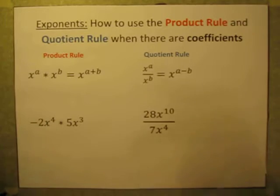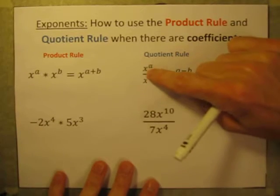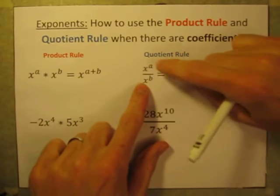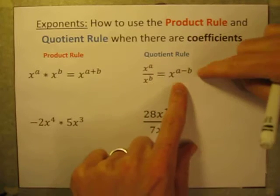With the quotient rule, it's the opposite. If you're dividing two numbers and the bases are the same, both x, you can just take those two exponents and subtract them.